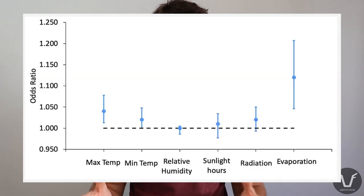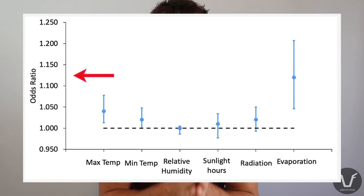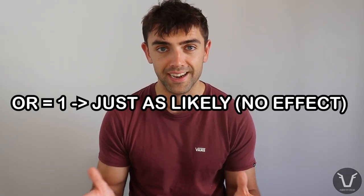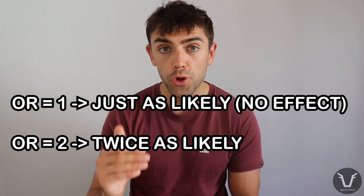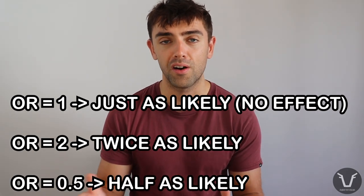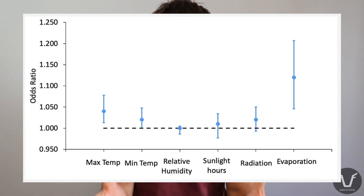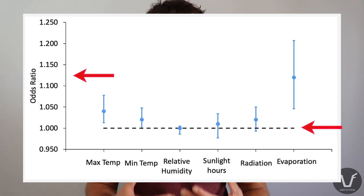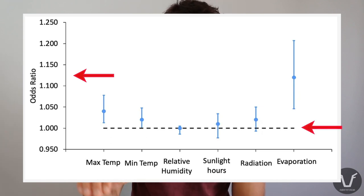Factor number four is the climate. The authors looked at several different climatic factors and averaged them in the week before conception. Here's a graph illustrating some of them. They're expressing this in terms of an odds ratio. If you haven't come across odds ratios before: if I change some factor and the odds ratio is one, it's had no effect; if the odds ratio is two, that makes a given outcome twice as likely; if it's 0.5, it makes the outcome half as likely. The graph has an axis for odds ratio, with a dashed line at one indicating no effect.